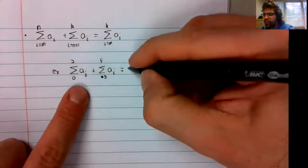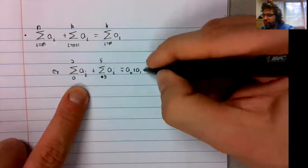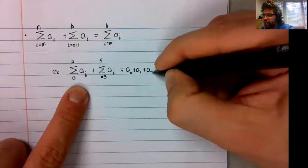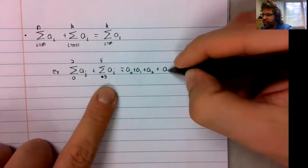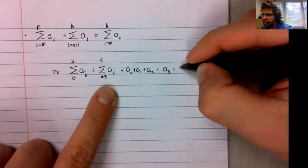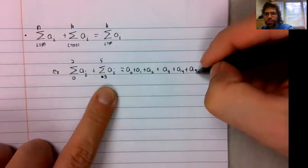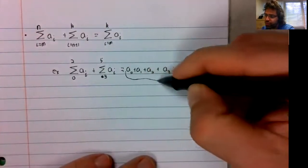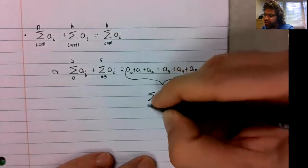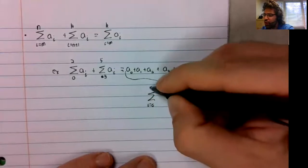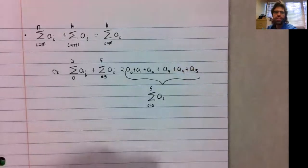So this is a sub zero plus a sub one plus a sub two. This is a sub three plus a sub four plus a sub five. And all we're saying is that this is the sum from zero to five of these a's.